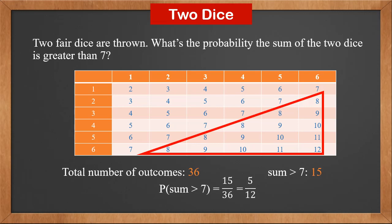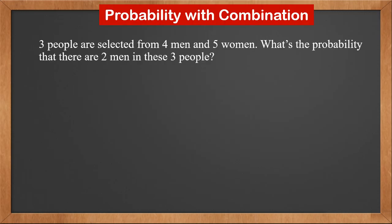For this kind of sum problems, we usually draw out a table and calculate the sum. Then it is easy to count the number of outcomes. We can also calculate probability using combination.